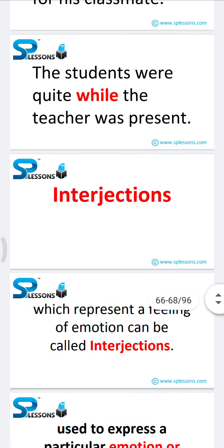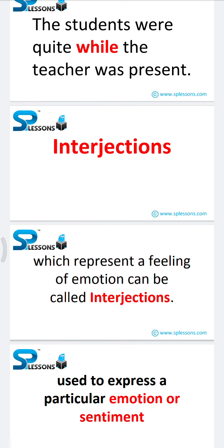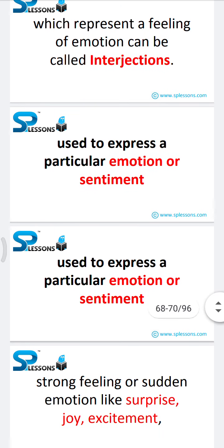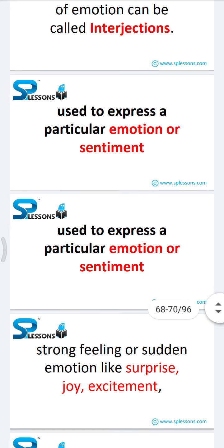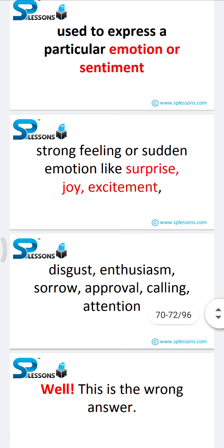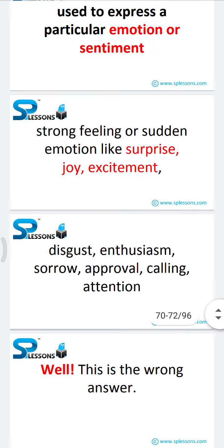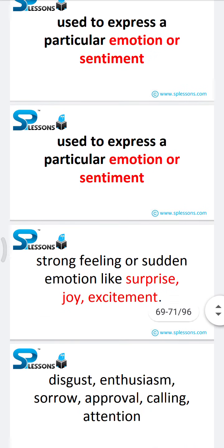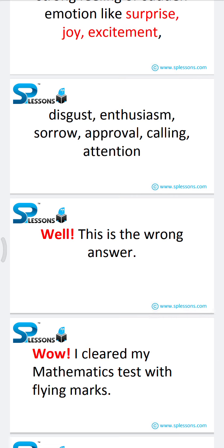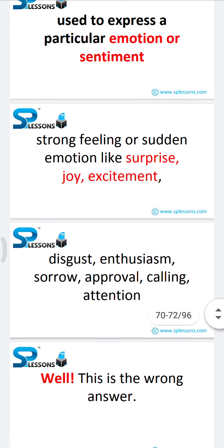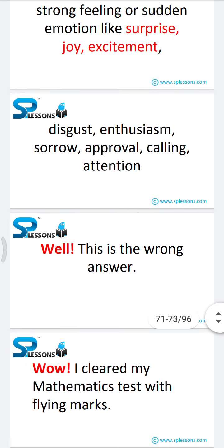The last part of speech is interjections. Words which represent a feeling or emotion are called interjections. They are used to express a particular emotion or sentiment, like strong feelings or sudden emotions such as surprise, joy, excitement, disgust, enthusiasm, sorrow, or approval. 'Well, this is the wrong answer' — here 'well' is the interjection. 'Wow, I cleared my mathematics test with flying marks' — here 'wow' is the interjection expressing surprise, joy, and excitement.